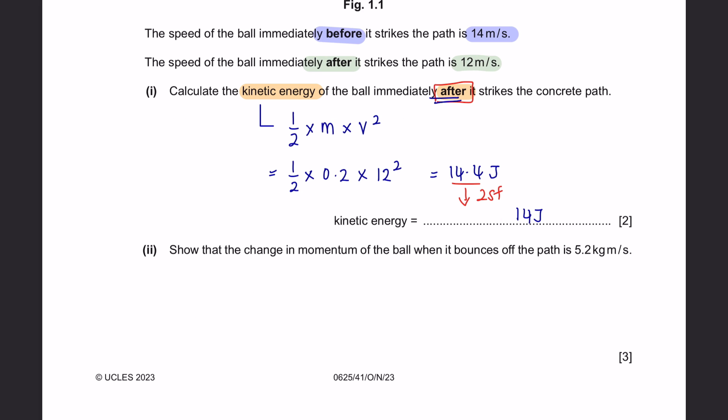Question part 2. Show that the change of momentum of the ball when it bounces off the path is 5.2 kilograms per meter seconds. The formula for change of momentum is mv minus mu. And we are asked to show that the momentum is 5.2 kilograms meter per second. The ball before it strikes the path is 14 meters per second. And immediately after it strikes, the velocity is 12 meters per second.